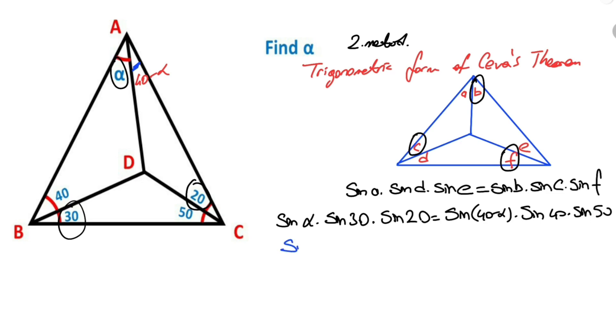And then sine alpha over sine of 40 minus alpha must be equal sine 40 times sine 50 over sine 30 times sine 20. Right?